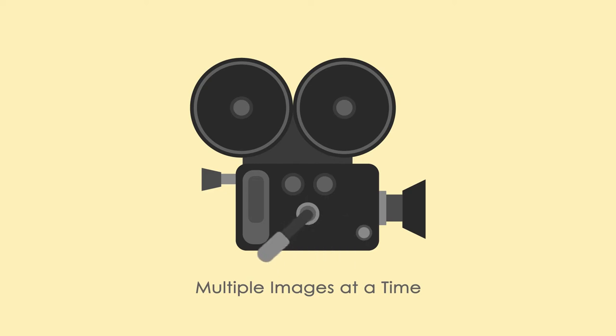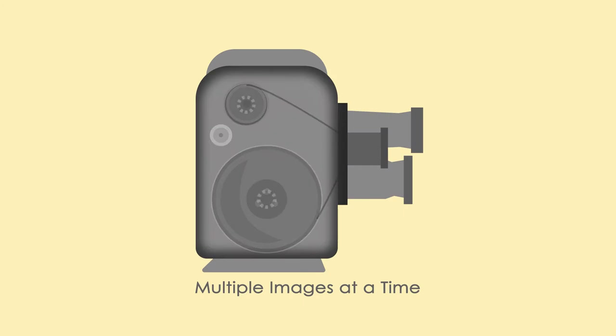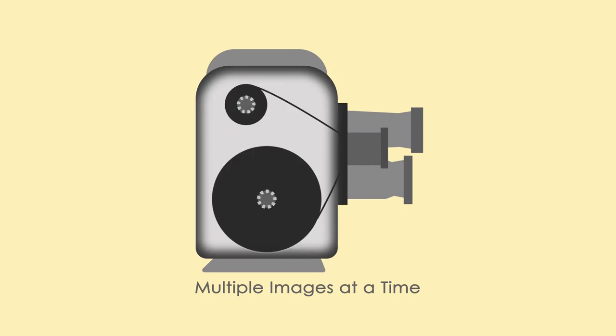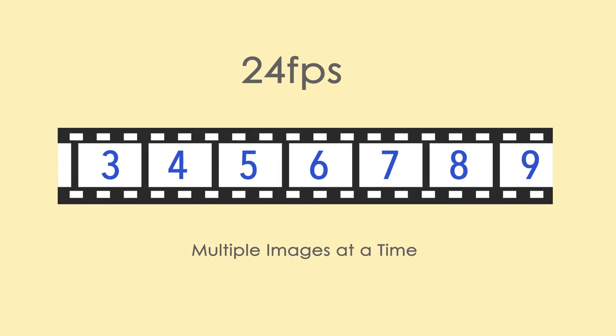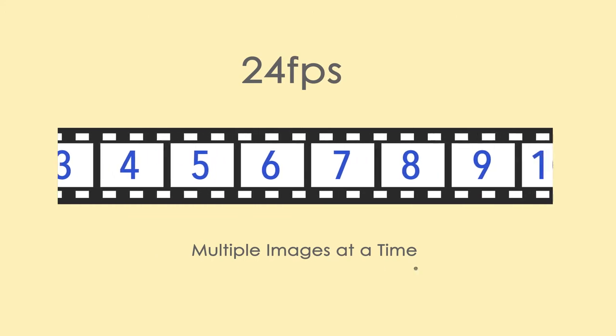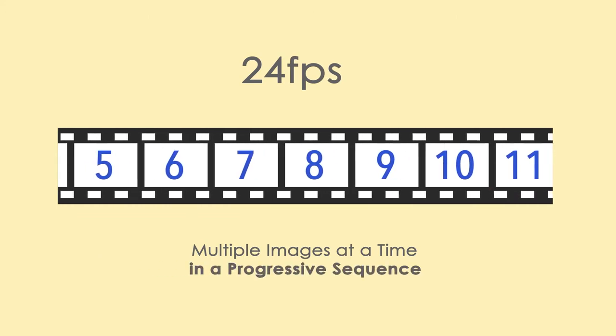Notice those old movies — all the action is sped up and weird feeling. But motors were eventually added, which led to a standard of 24 frames per second. Each image was exposed in its entirety, creating a progressive order in the images. And these cameras were all mechanical.